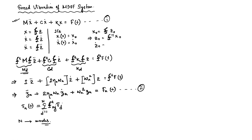Similarly, z-dot-naught equals φ-inverse x-dot-naught. This is one way to find the initial conditions in modal coordinates. Now, once we know z-naught and z-dot-naught, we can easily solve equation 2. What we will do today is apply some sinusoidal force at different degrees of freedom of an MDOF system and then solve it.